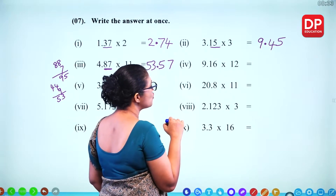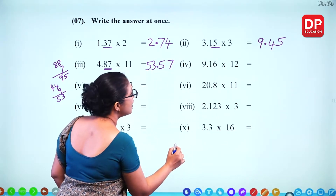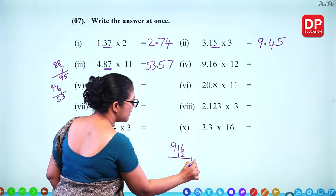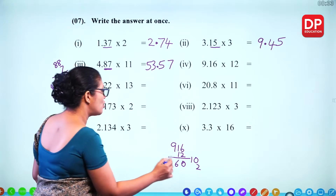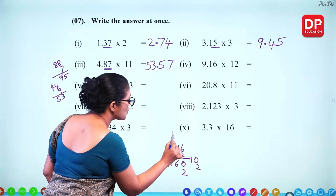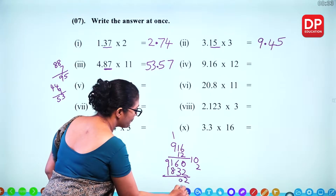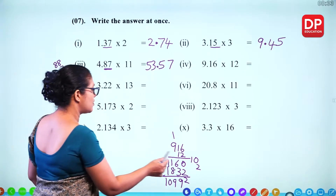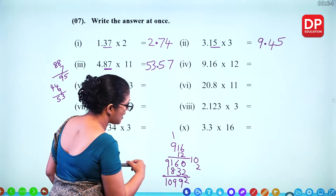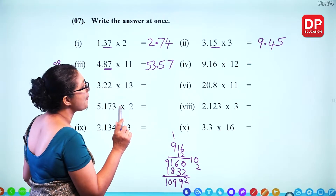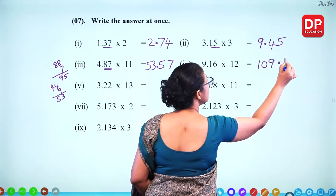For 9.16 times 12: 916 multiplied by 12. Split into 10 and 2. Multiply by 2: 2 times 6 is 12 (1 remaining), 2 times 1 plus 1 is 3, 2 times 9 is 18. Add the results together. With 2 decimal places, you get the answer 109.92.